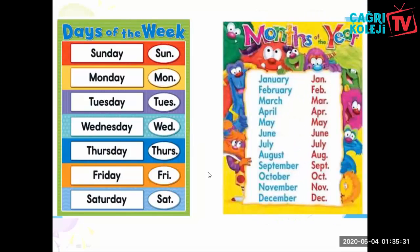Days of the week: Sunday, Monday, Tuesday, Wednesday, Thursday, Friday, Saturday. These are the days of the week. In our country, the first day of the week is Monday, second is Tuesday, third is Wednesday, fourth is Thursday, Friday is the fifth, Saturday is the sixth, and Sunday is the seventh day of the week. But in some countries, people accept Sunday as the first day of the week.